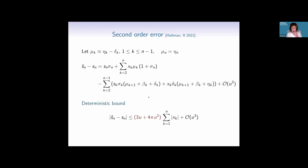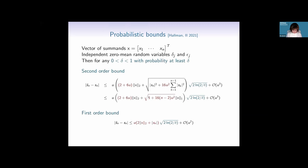We also obtain a second-order error bound. The deterministic bound gives 3 times machine unit round-off plus 4n times second-order unit round-off. We also derive a probabilistic bound: with high probability, the first-order error involves the two-norm of x rather than the sum of absolute values, which is better; the second-order term has a square root of n factor, confirming the error to second order is proportional to square root of n.